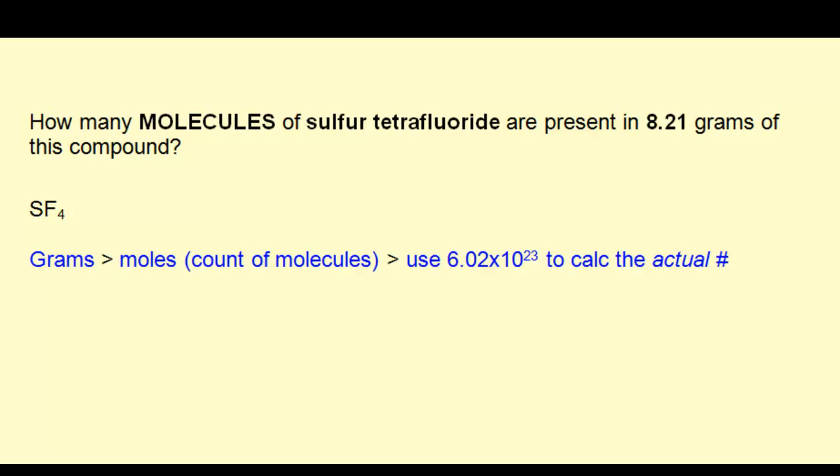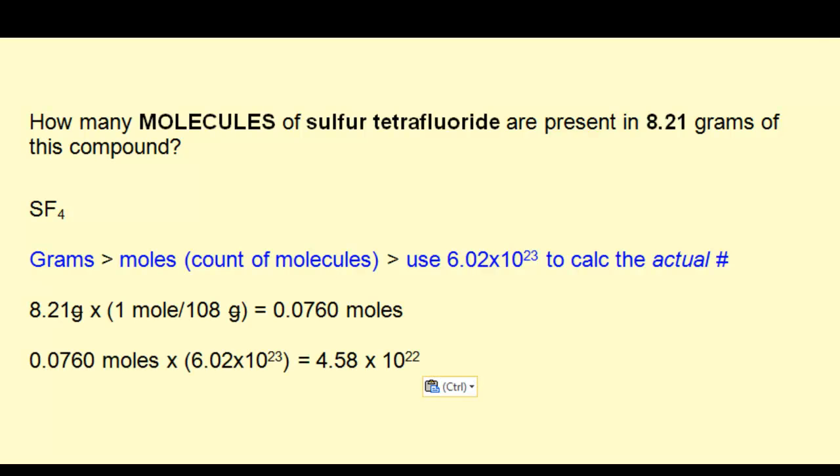The calculation looks like this. Start with 8.21 grams, multiply by the reciprocal of the molar mass of the compound, 1 over 108 grams. Notice the grams cancel out and you're left with moles of the compound. Now 0.0760 moles should make sense, because it takes 108 grams of the compound to have a mole.